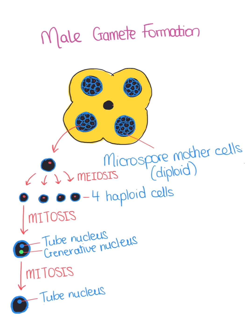The cell then undergoes mitosis one more time, where the generative nucleus forms two sperm nuclei. The two sperm nuclei form the male generative nucleus.